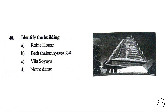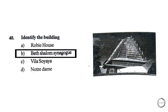Next, identify the building in the image below. Options are: A) Robie House, B) Beit es-Salomone Synagogue, C) Villa Savoye, D) Notre Dame. The right answer is option B, Beit es-Salomone Synagogue.